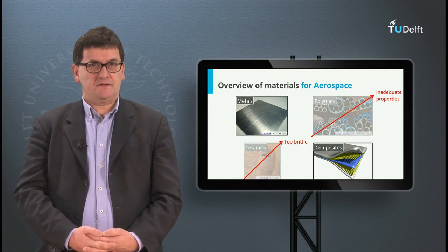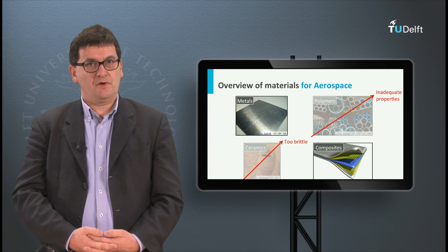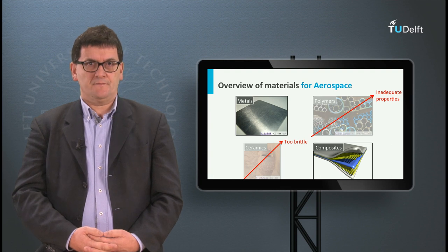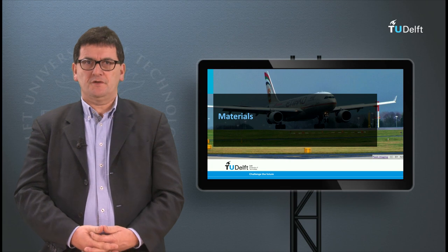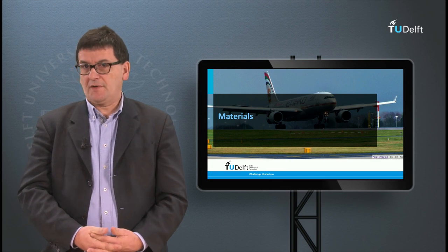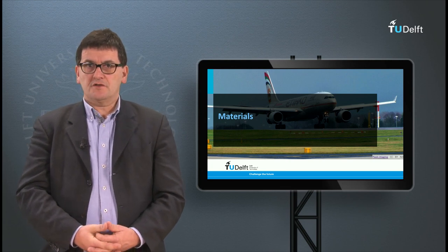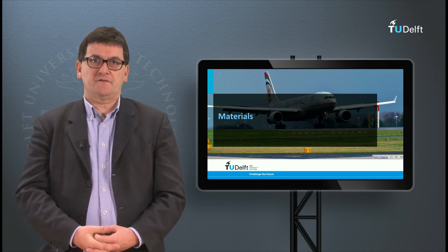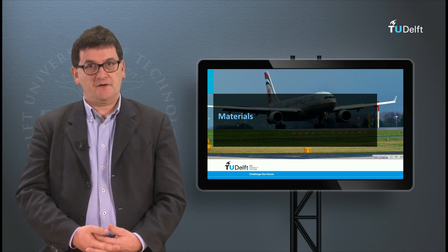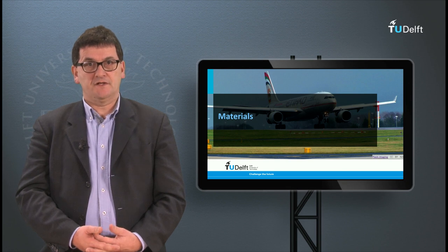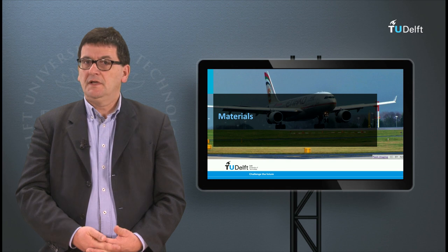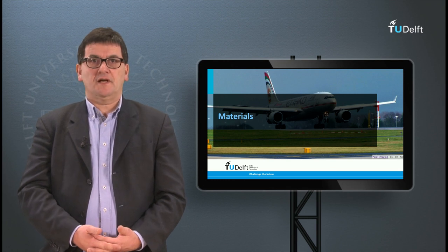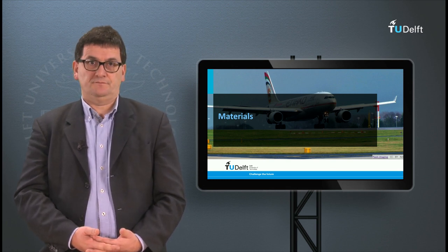If a metal component is hit and fails, at least it will dent before it fails. So metal alloys and composites are the main materials used in aeronautical applications. They are used because they have sufficient mechanical properties, high strength, high stiffness, and they are not brittle. In the next lecture we will look at the material properties in more detail.